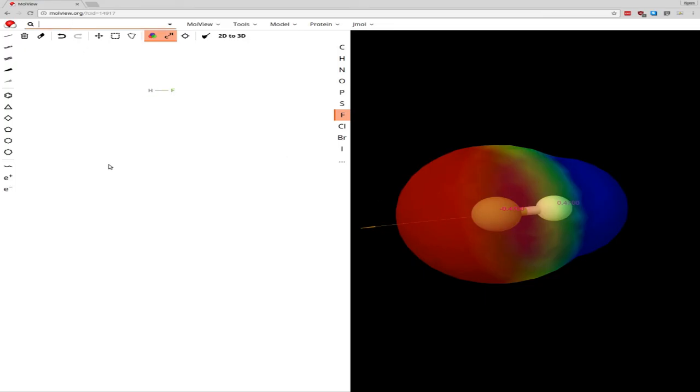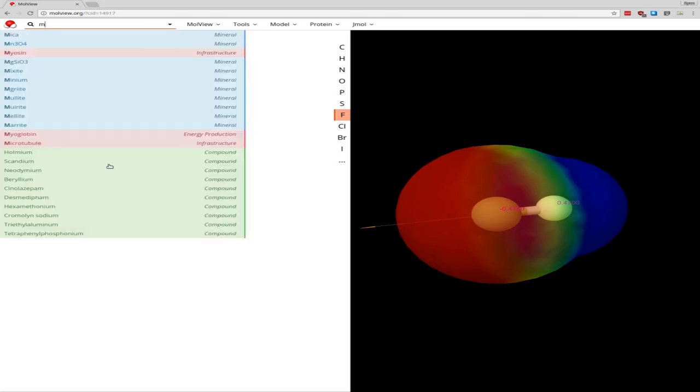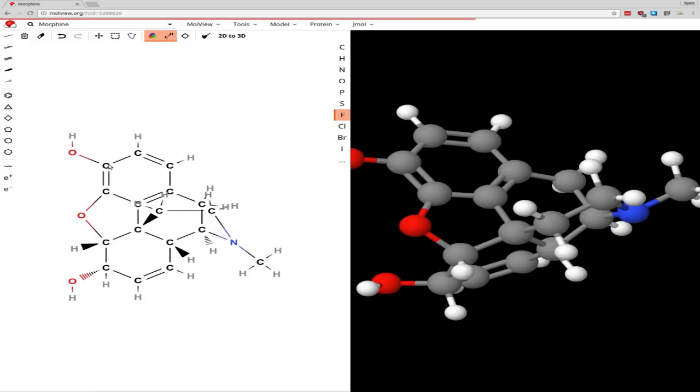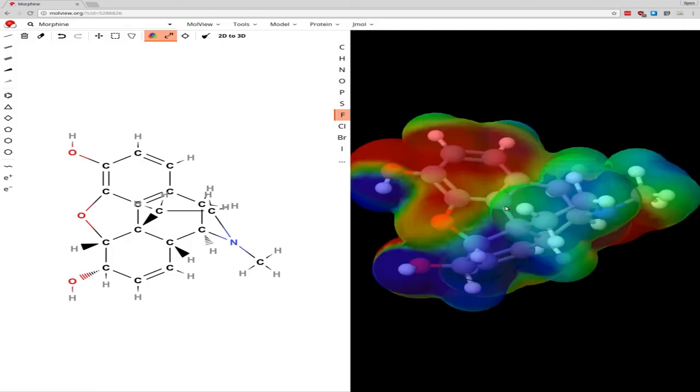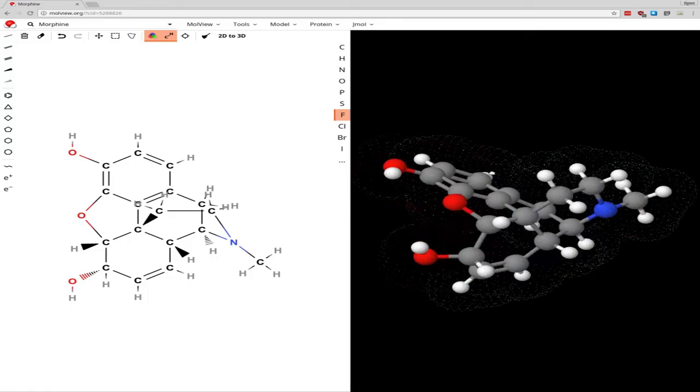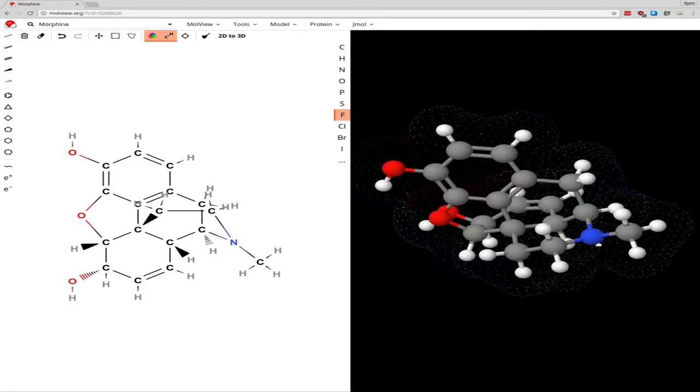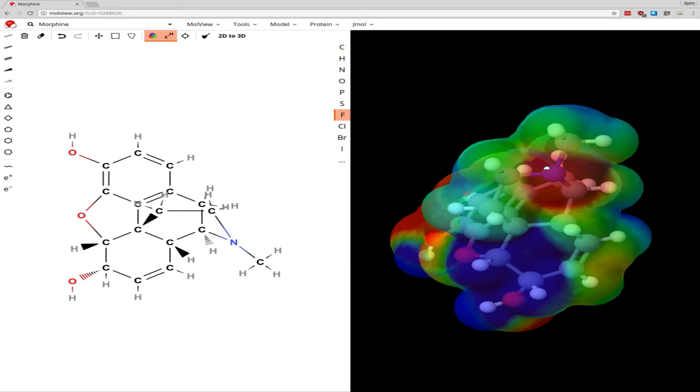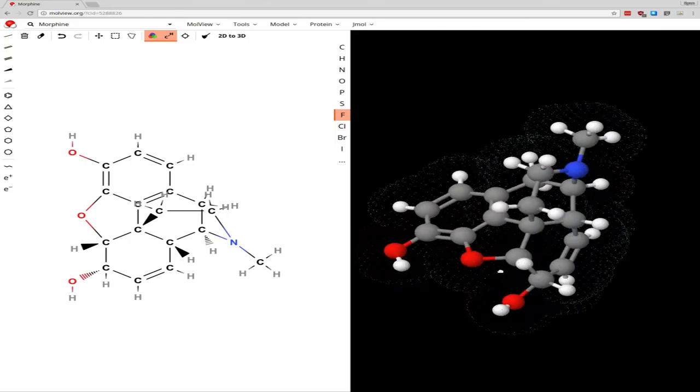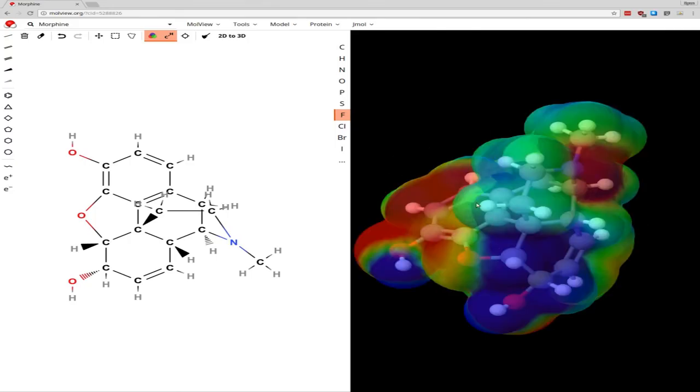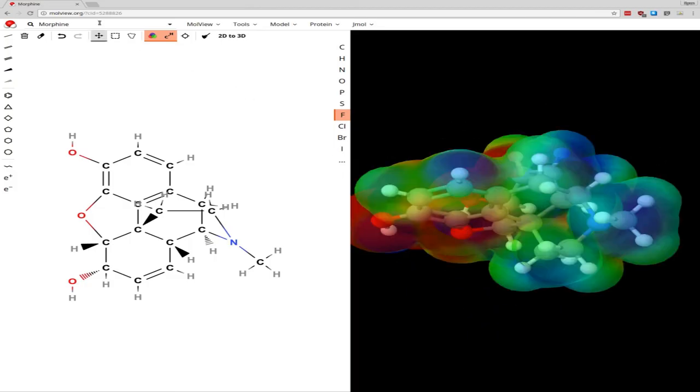You can also look up molecules. Go over to the search bar. Let's look up morphine. Let's go ahead and do the charge mapping on morphine. So you can see where these oxygens and this nitrogen are. We have very electronegative regions. And so those might be places, for example, where if we had a positive cation, it might like to come and stick to this molecule.